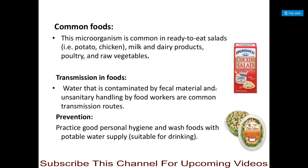Prevention of Shigella foodborne infection includes practicing good personal hygiene and washing foods with a potable water supply — water suitable for drinking purposes. These preventive measures help prevent foodborne infection caused by Shigella species.